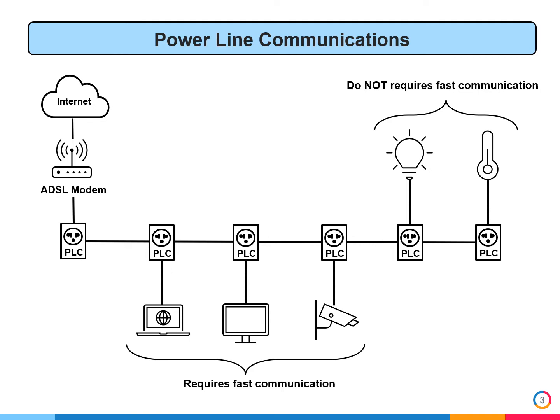Recent works in PLC focus mainly on increasing the transmission data rate. They are especially useful for devices that require fast communications, such as computers, TVs, and cameras. However, many IoT devices such as smart meters, smart lights, air conditioning, and presence sensors do not require high data rate communication.